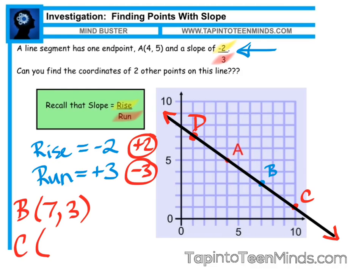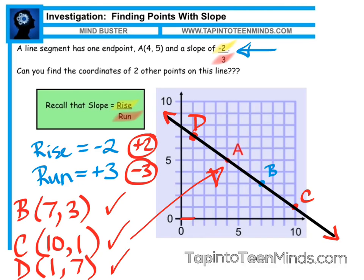For C, we're at 10 on the x-axis, and we rise 1, so that would be 10, 1. And finally for D, we're 1 on the x-axis, and we rise up. It looks like 7 on the y-axis, so we have 3 additional points on the same line as A.